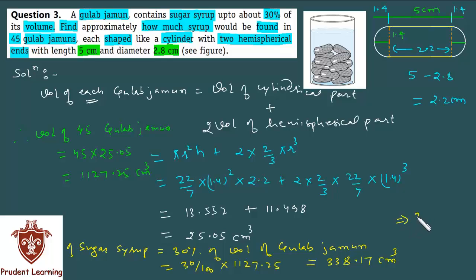And if you want to round off... Finally, you found the volume of sugar syrup in these 45 Gulab Jamuns as 338 cm³. The total Gulab Jamun volume is this much, out of which sugar syrup volume is 338 cm³. So this completes our solution. Let us see the next question.